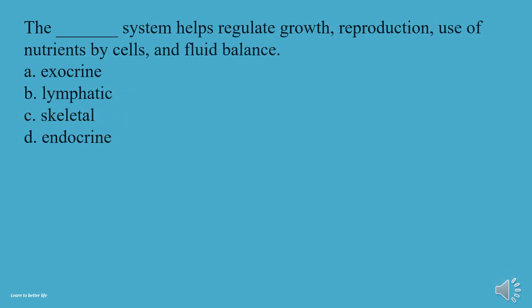What system helps regulate growth, reproduction, use of nutrients by cells, and fluid balance? A, Exocrine. B, Lymphatic. C, Skeletal. D, Endocrine. The answer is D, Endocrine.